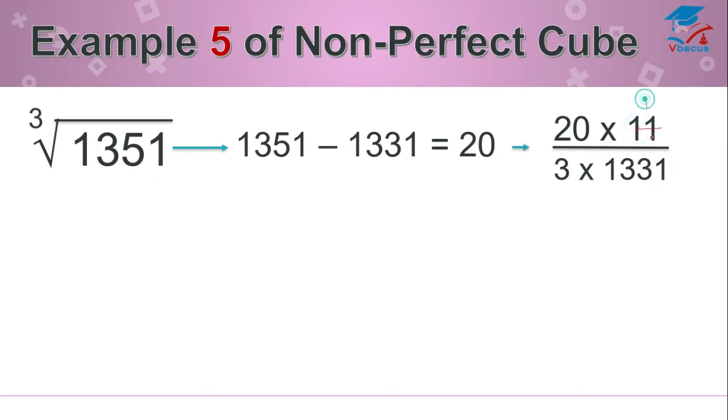So 11 ones are 11, 11 ones are 11, remainder 2, 23, 11 twos are 22, remainder 1, so it will become 11, 11 ones are 11. So you have to divide 20 by 3 ones are 3, 3 twos are 6, 3 ones are 3, by 363.